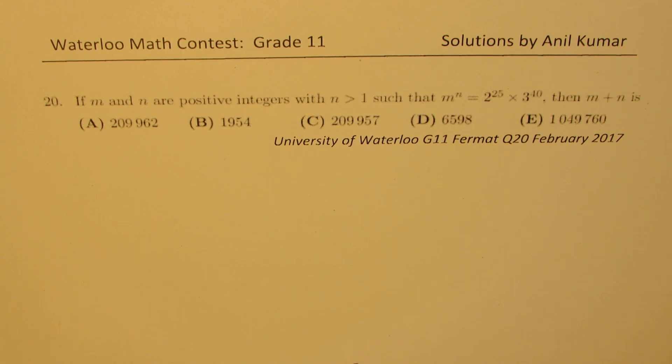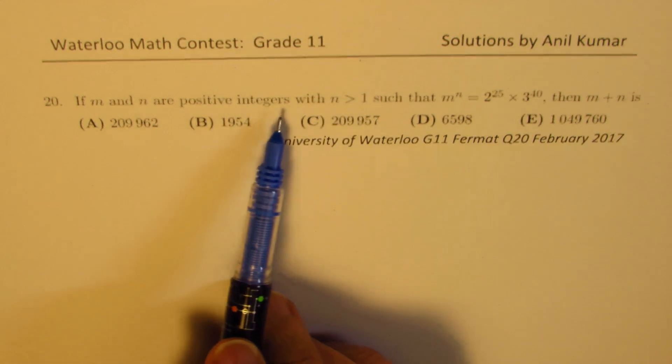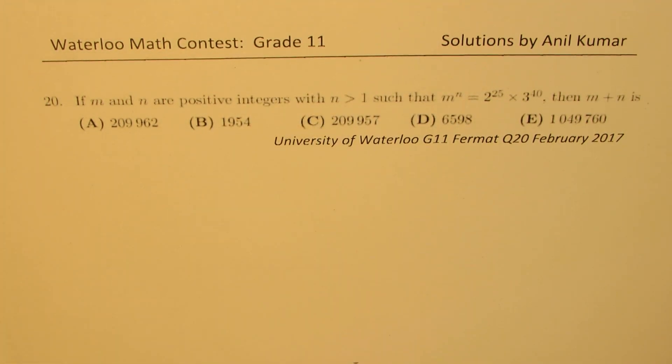So we will today take up few questions from previous test papers. Here is question number 20 from February 27 test paper of Waterloo. Question is, if m and n are positive integers with n greater than 1 such that m^n equals 2^25 times 3^40, then m plus n is what? Five choices are given to you.